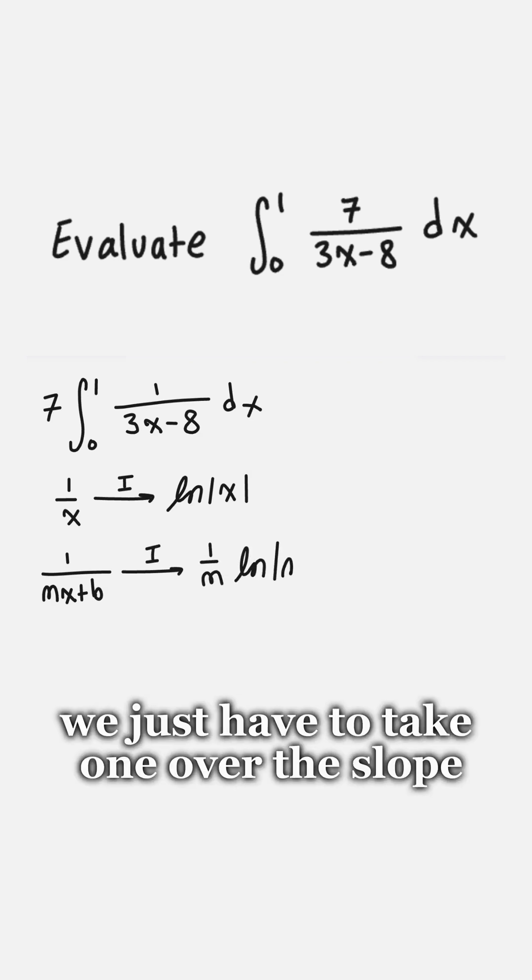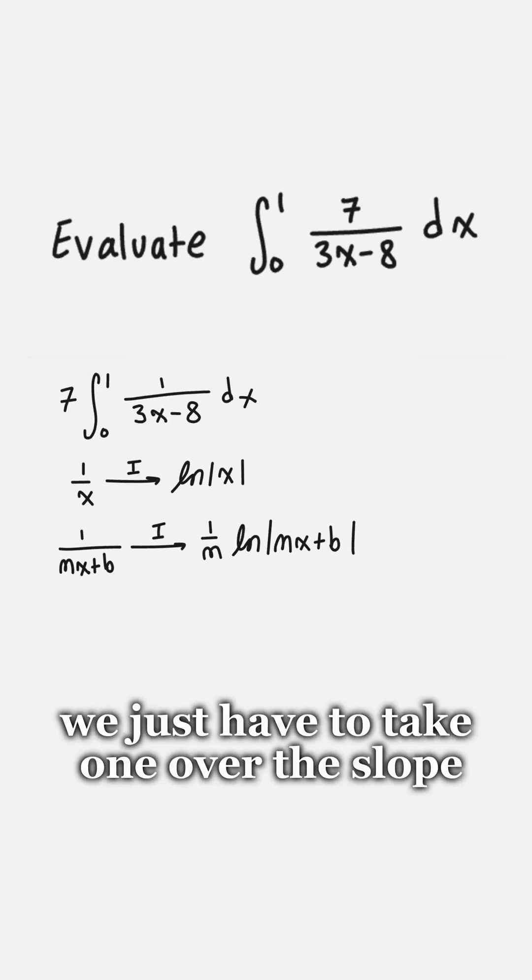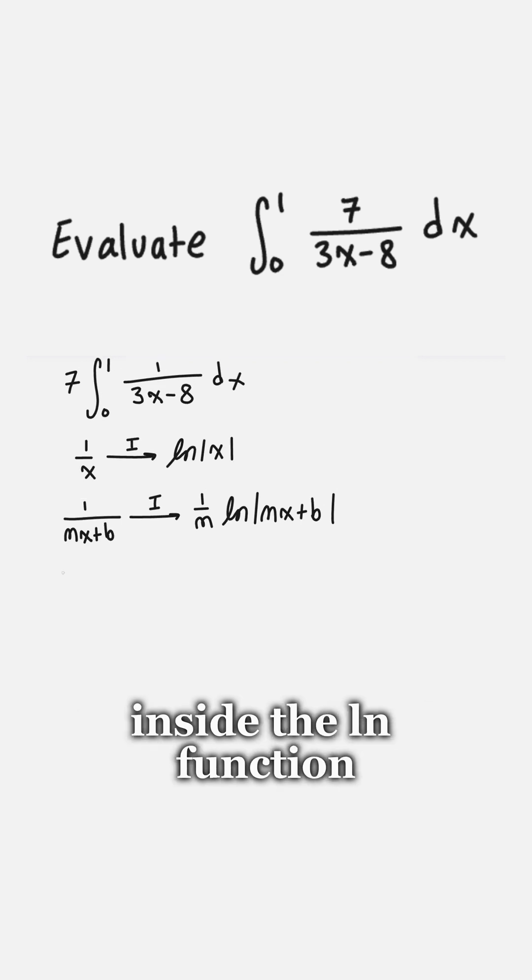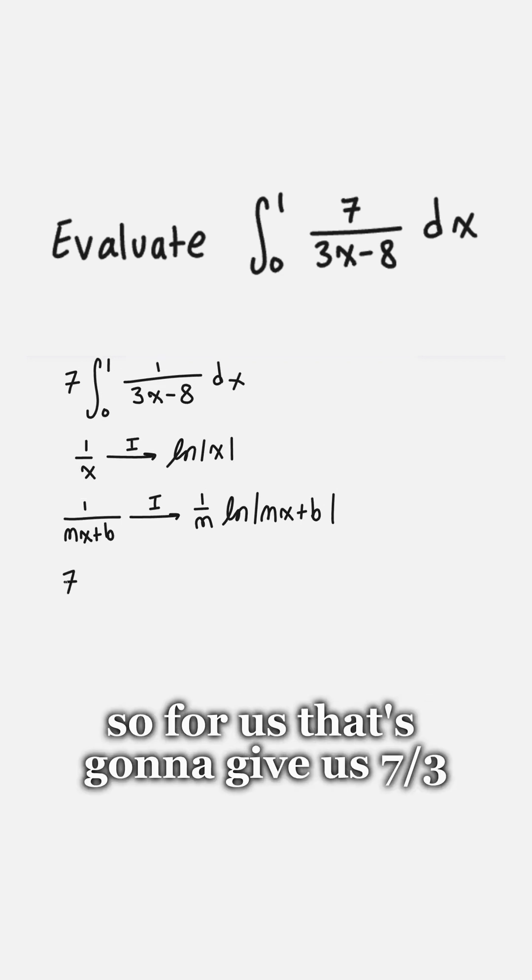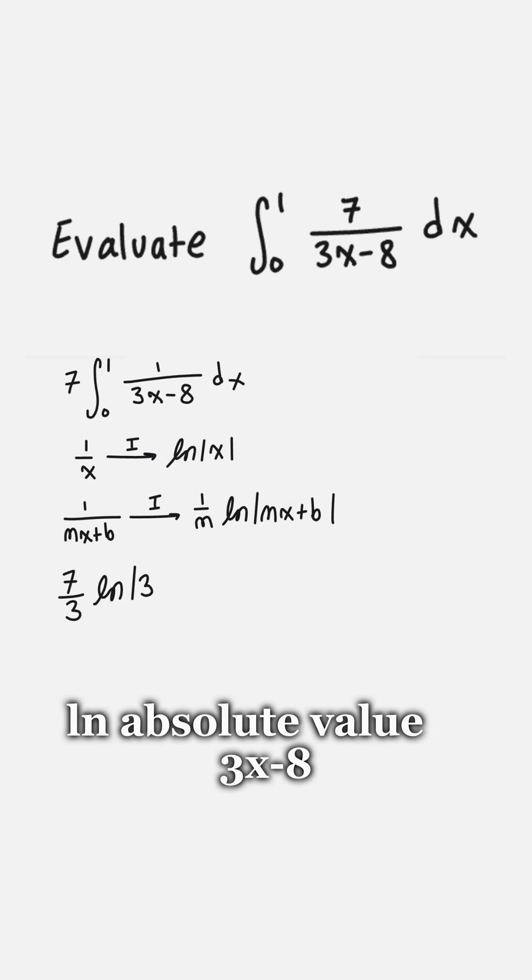So when we integrate that we just have to take 1 over the slope and then put that linear equation inside the ln function. So for us that's going to give us 7 over 3 ln absolute value 3x minus 8.